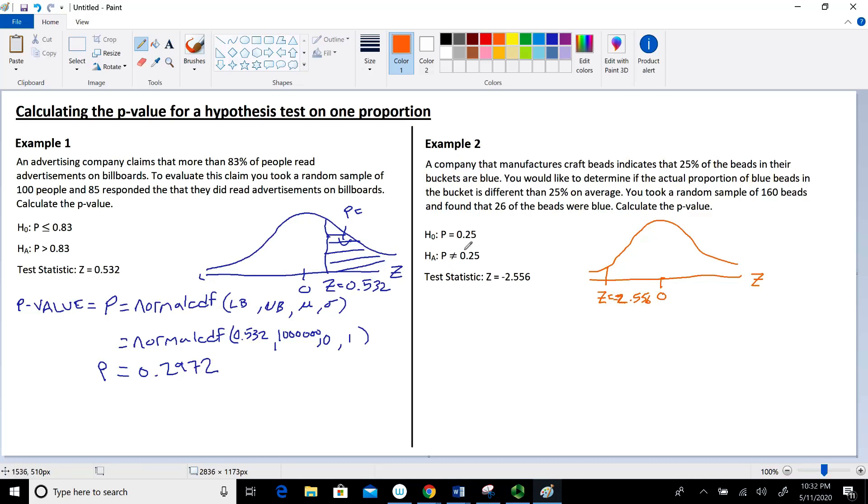With this not equal to sign, it's hard to tell which direction we're shading. I tell my students to shade to the closest tail. In actuality, the not equal to sign implies it's something different than 0.25, so it could be smaller or larger than 0.25. Since our test statistic ends up on the left, we're looking at the case where it's smaller than that value. We want this area, which is part of our p-value.